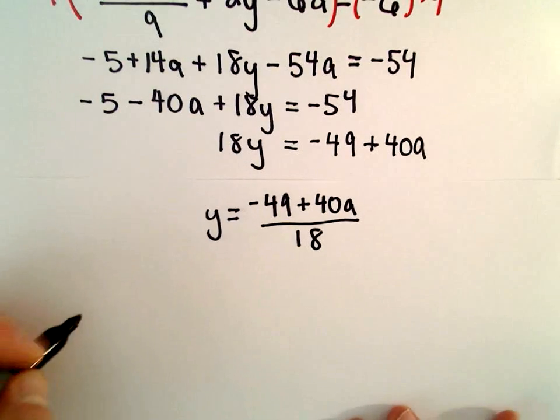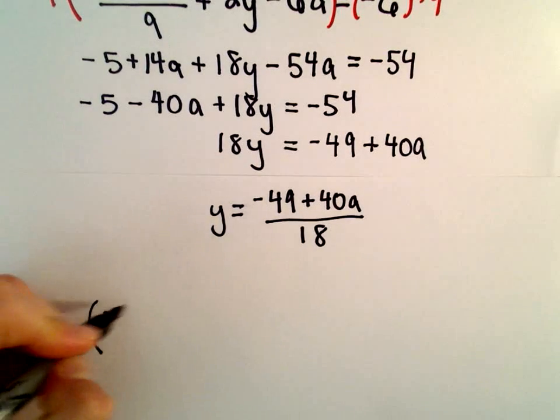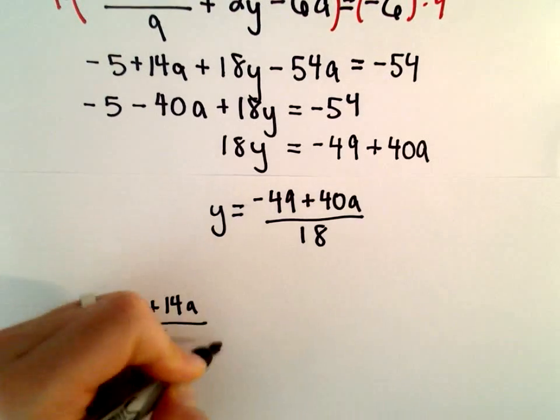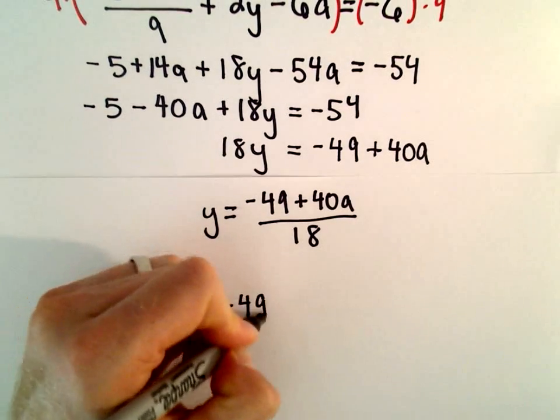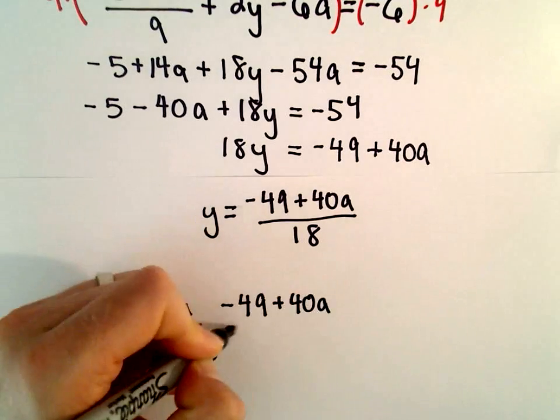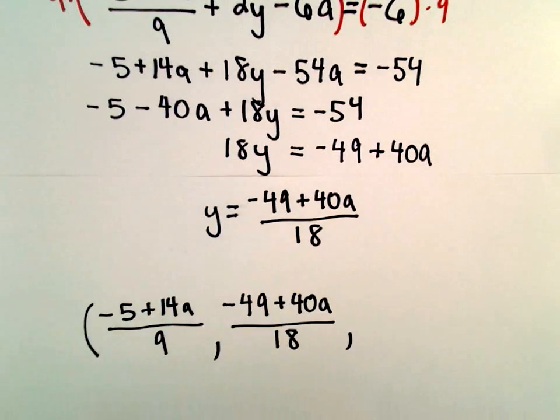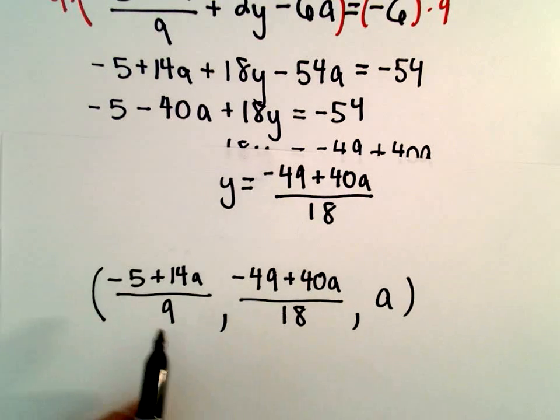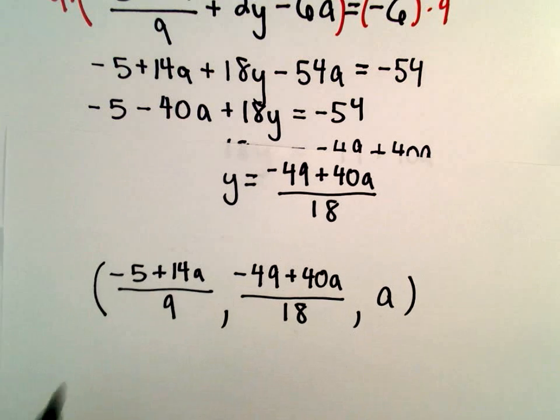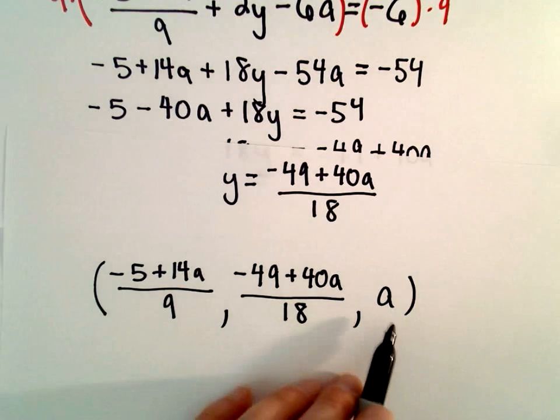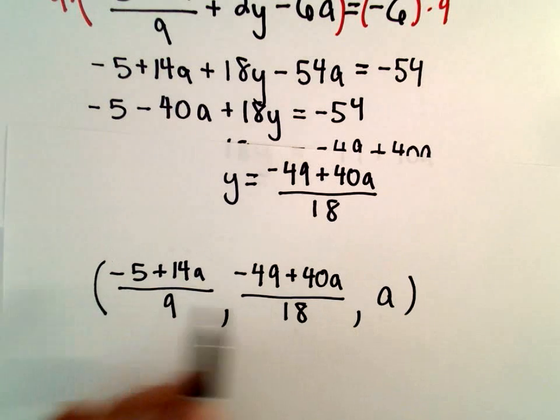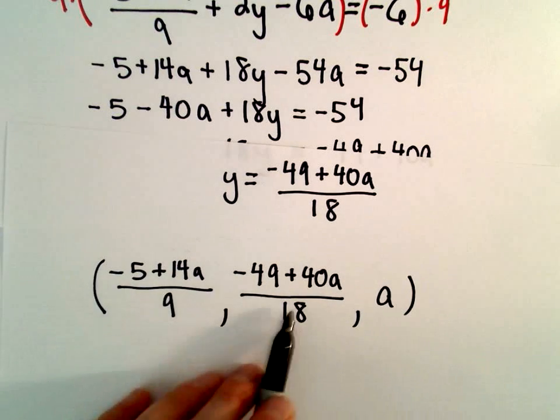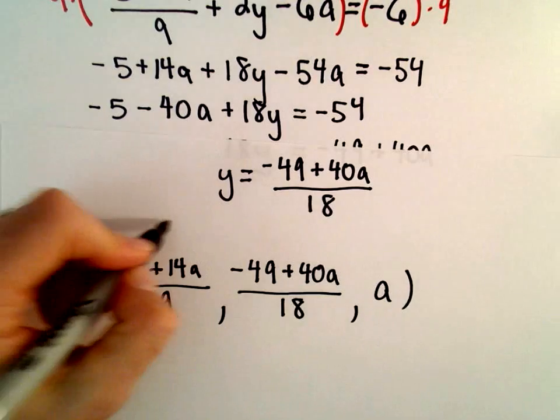And now we've got our solution. We can write our generic solution. We said x was negative 5 plus 14a divided by 9. The y value will be negative 49 plus 40a divided by 18. And then we said the value for z, we were just letting that equal a. So now we've got the form of our solution. So if you wanted some specific solutions, you could start picking values for a. You could let a equal any value. That would clearly determine z. It would also determine x and y, and you could figure those values out after a bit of arithmetic.